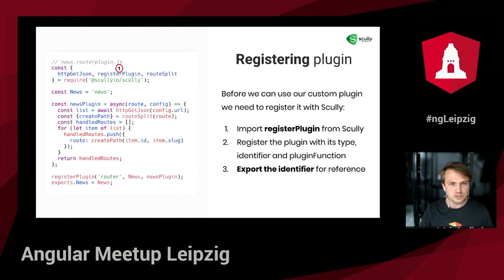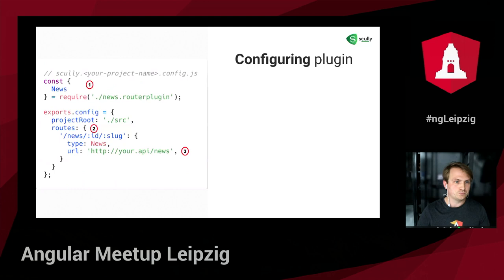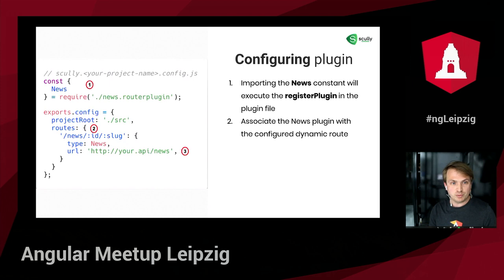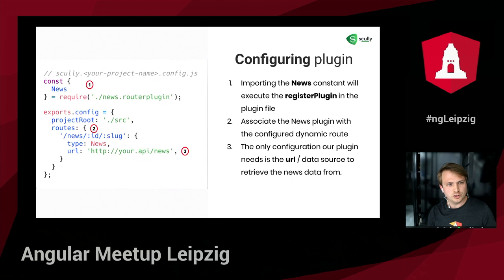Before we can use this custom plugin, we need to register it with Scully using the `registerPlugin` method, defining its type, identifier, and plugin function. We export the identifier for reference and to use it in the Scully config file. The last step is to import the plugin — importing this constant will execute the code and the plugin gets registered. We then associate the news plugin with the configured dynamic route. The only configuration our plugin needs is the URL of the data source from which to retrieve the news data. Our custom router plugin is now configured and usable — we'll see it in action in the demo.